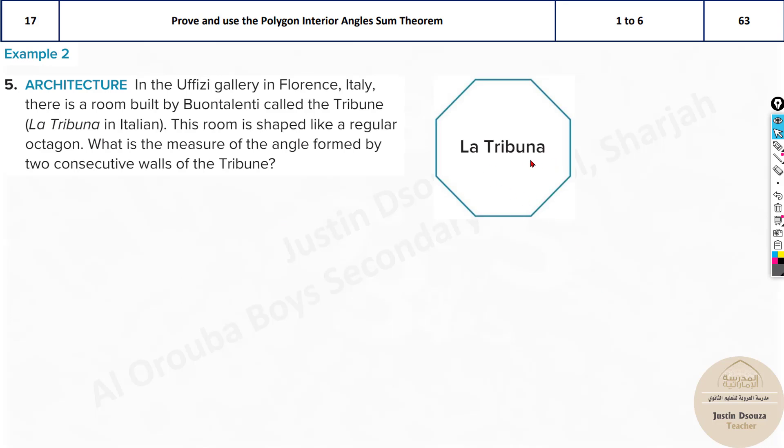We have a real-world problem here about architecture, La Tribuna. In the Uffizi Gallery in Florence, Italy, there's a room built by Buontalenti called the Tribune. It's La Tribuna in Italian. This room is shaped like a regular octagon. What is the measure of the angle formed by two consecutive walls of the Tribune? It's the same concept. But now it's an octagon. That means all the angles are equal here. How many sides are there in an octagon? It's 8. So the formula is n minus 2 times 180. Here it's 8 minus 2 times 180, so it's 6 times 180. 180 times 5 is 900, plus 180 is 1080.